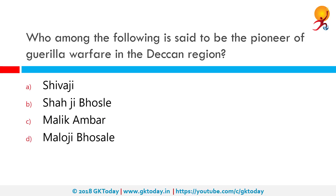Who among the following is said to be the pioneer of guerrilla warfare in the Deccan region? The correct answer is Malik Ambar. Ambar was a man of undaunted heroism, indefinite energy and uncommon perseverance. He was a general of rare genius who remodelled the militia on a sound basis best suited to the hilly regions of his adopted country. The guerrilla tactics so well organised by him with the Maratha bands highly strengthened his position, and at times the Mughals showed their bankruptcy in dealing with him.